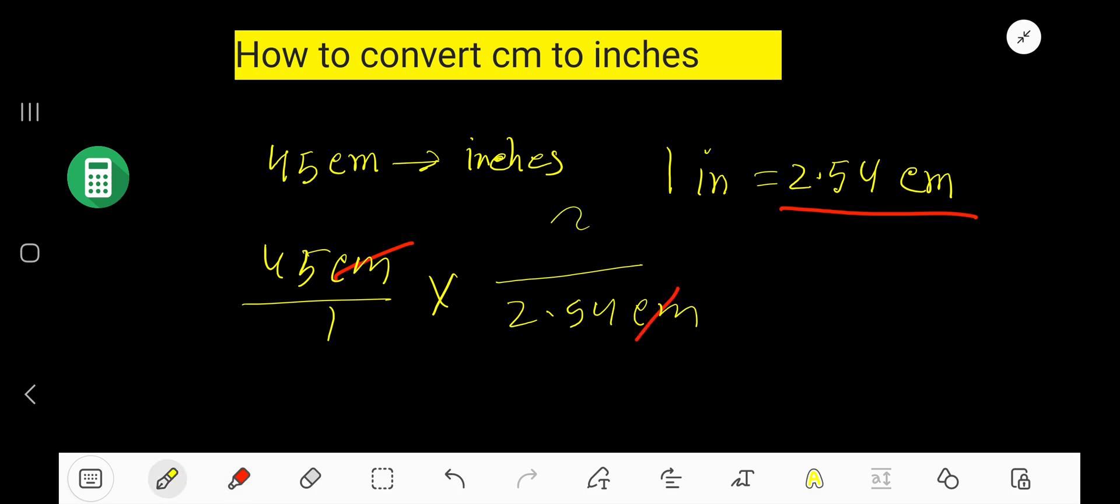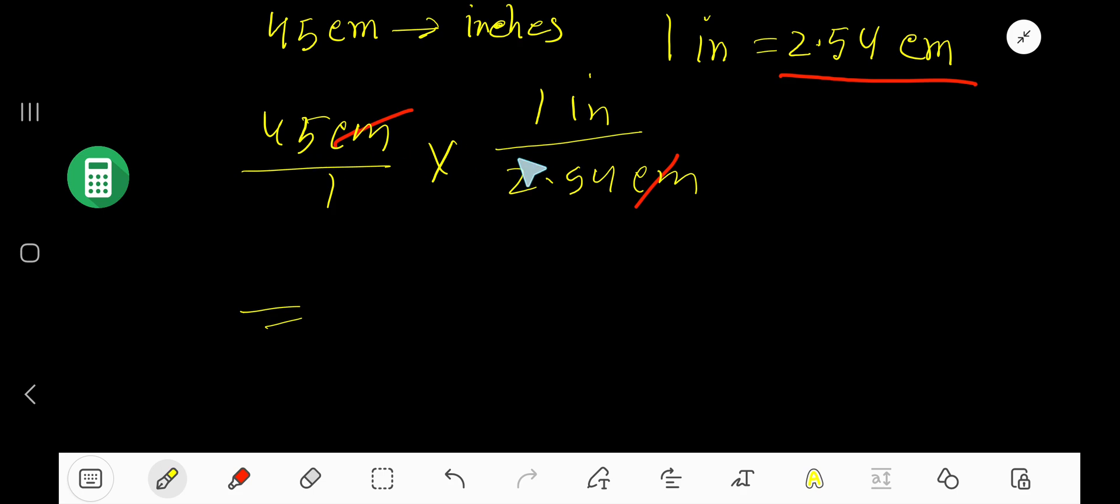...cancel, and this portion will come as numerator. So 45 times 1 means 45, 1 times 2.54 means 2.54.